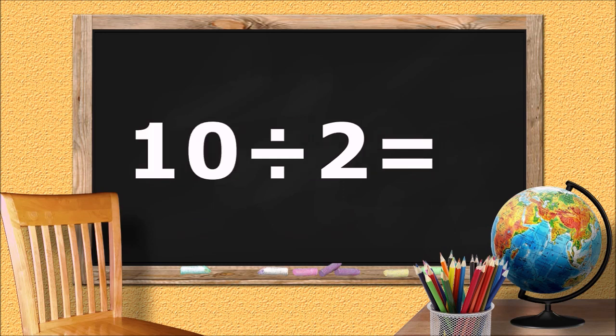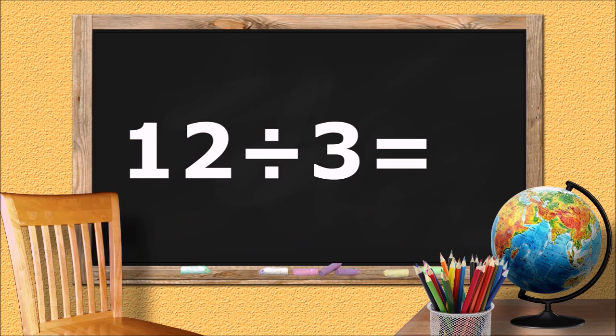Ten divided by two equals... five. Twelve divided by three equals... four.